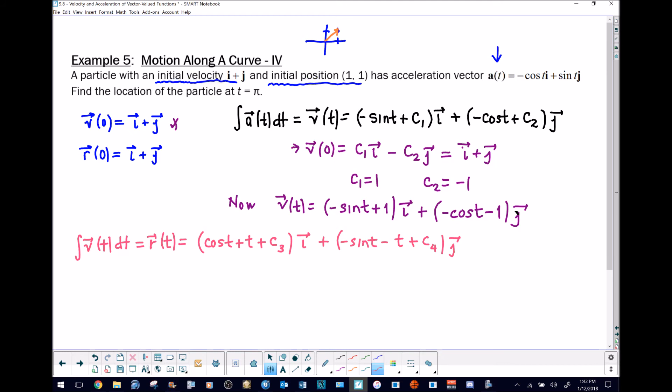Now we want to get very specific and find the exact position vector knowing what c3 and c4 are. We use the fact that r evaluated at zero is going to give us i j. If we plug in zero for t, we get one plus zero plus c3 times i.